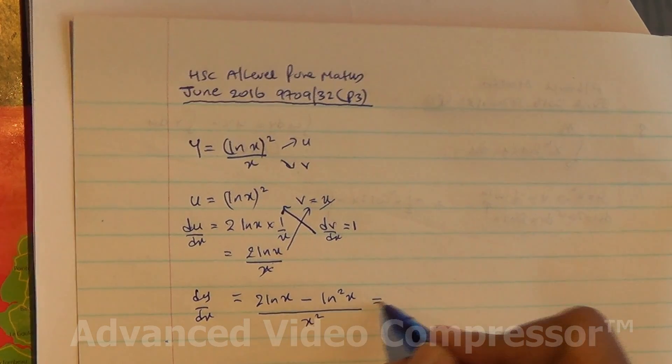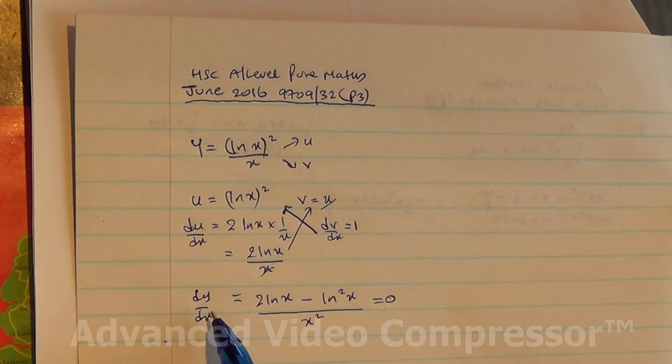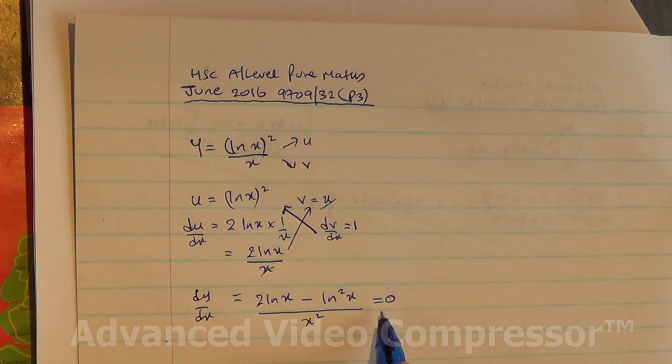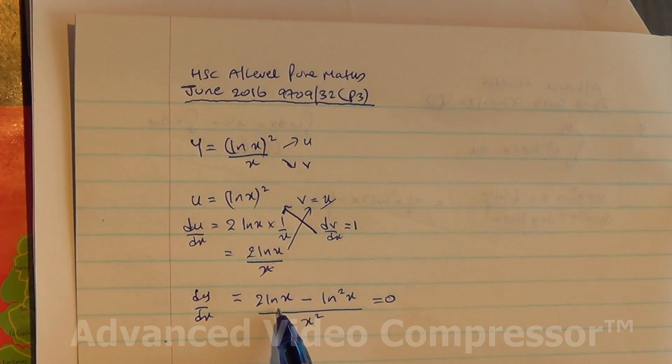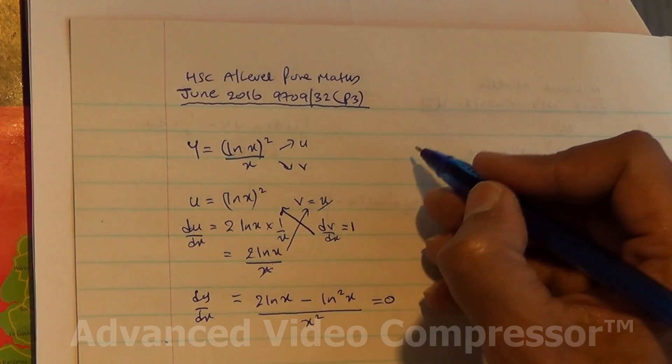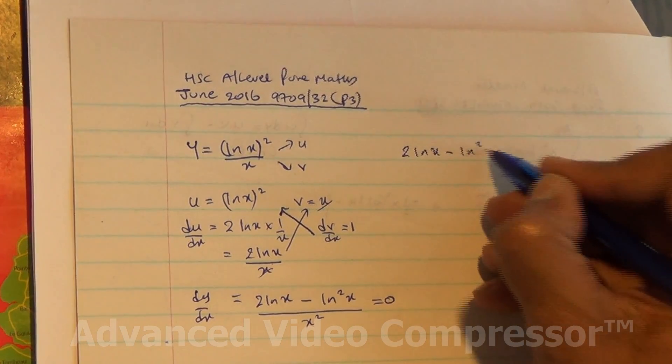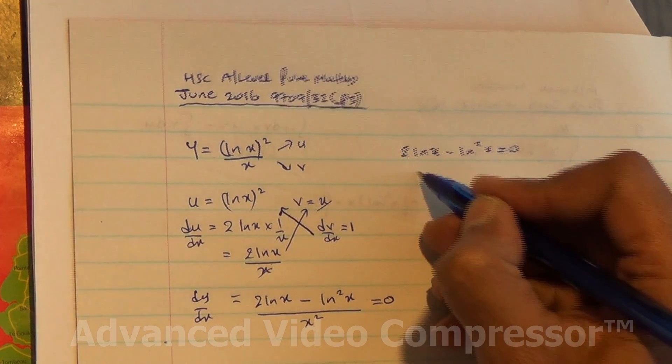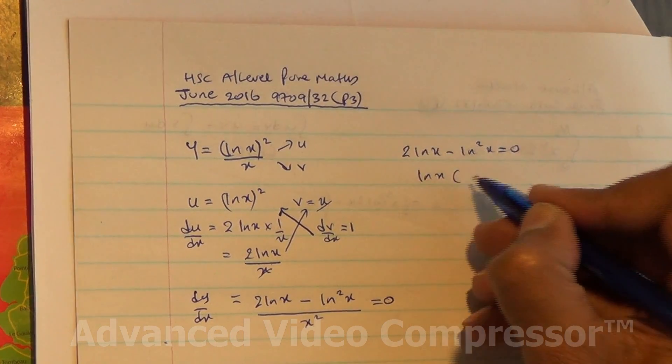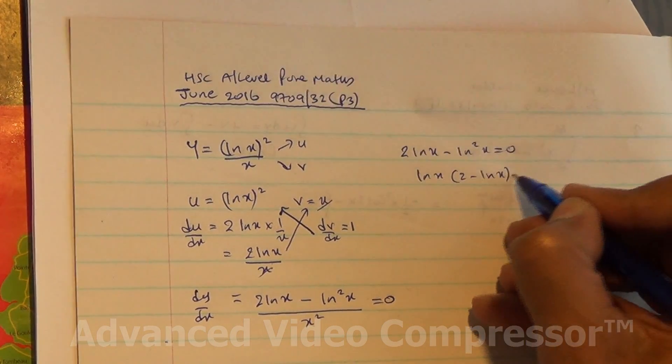We equate that to zero because we're finding stationary points. So dy/dx equals zero. x² times zero is zero, so we're left with 2 ln x minus (ln x)² equals zero.